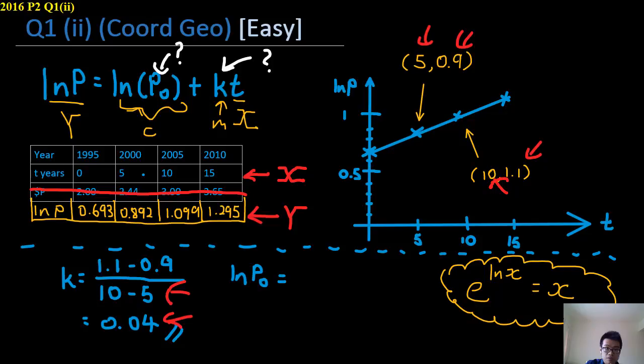As for ln P itself, ln P is equivalent to the y-intercept. So as a result, all you have to do is just copy this answer here from part one: 0.693.